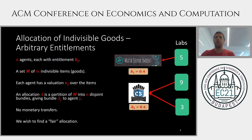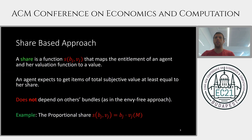An example allocation is to give the first lab of value 5 to the math department, while giving both other labs to the computer science department. To decide whether an allocation is fair, we use the share-based approach. In this approach, we define a reasonable share function that maps a valuation and an entitlement to a value representing what the agent expects to receive. In this approach, the value does not depend on what other agents receive, such as in the EF3 fairness approach.